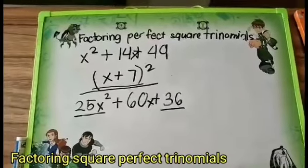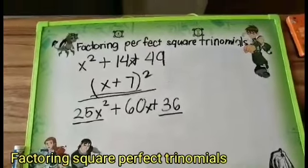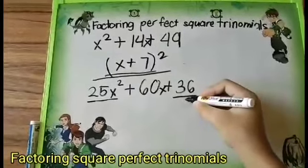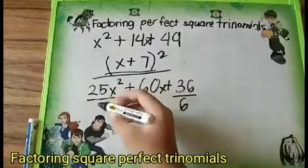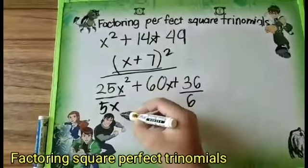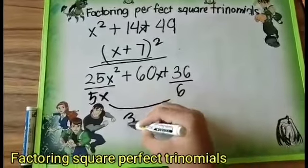The second example is quite hard because of the large numbers, but 36 is the perfect square of 6 while 25 is the perfect square of 5x. So if you multiply these two, the answer is 30x.